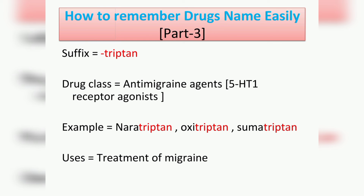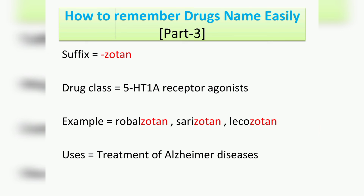The next suffix is '-triptan', which belongs to the drug class anti-migraine agents, specifically 5-hydroxytryptamine-1 (5-HT1) receptor agonists. Their usage is the treatment of migraine.